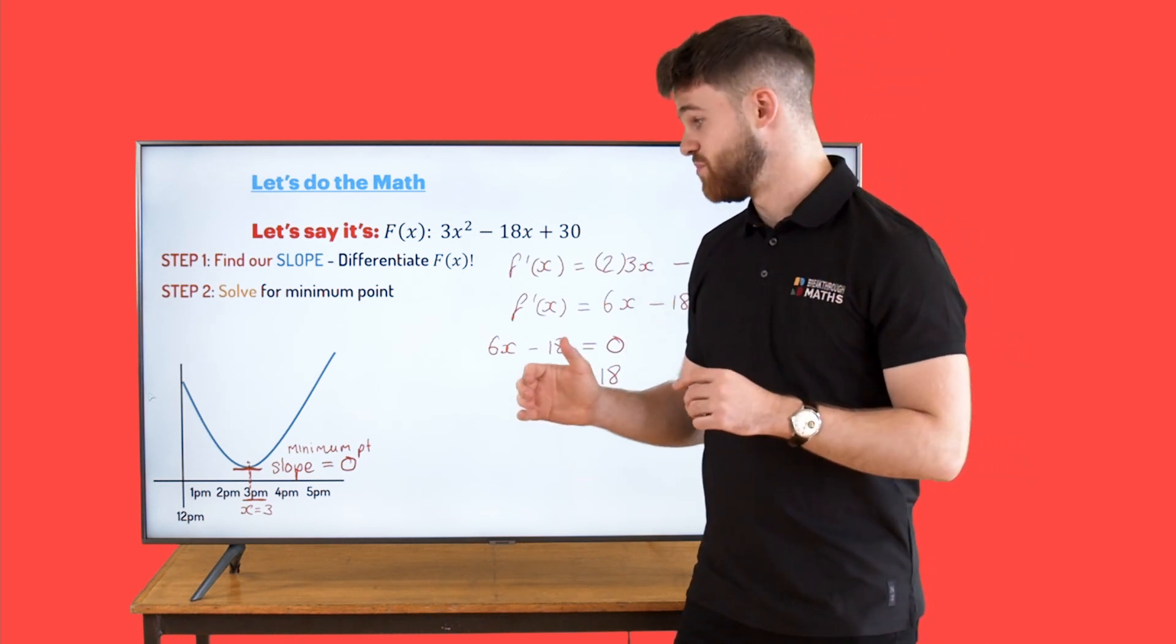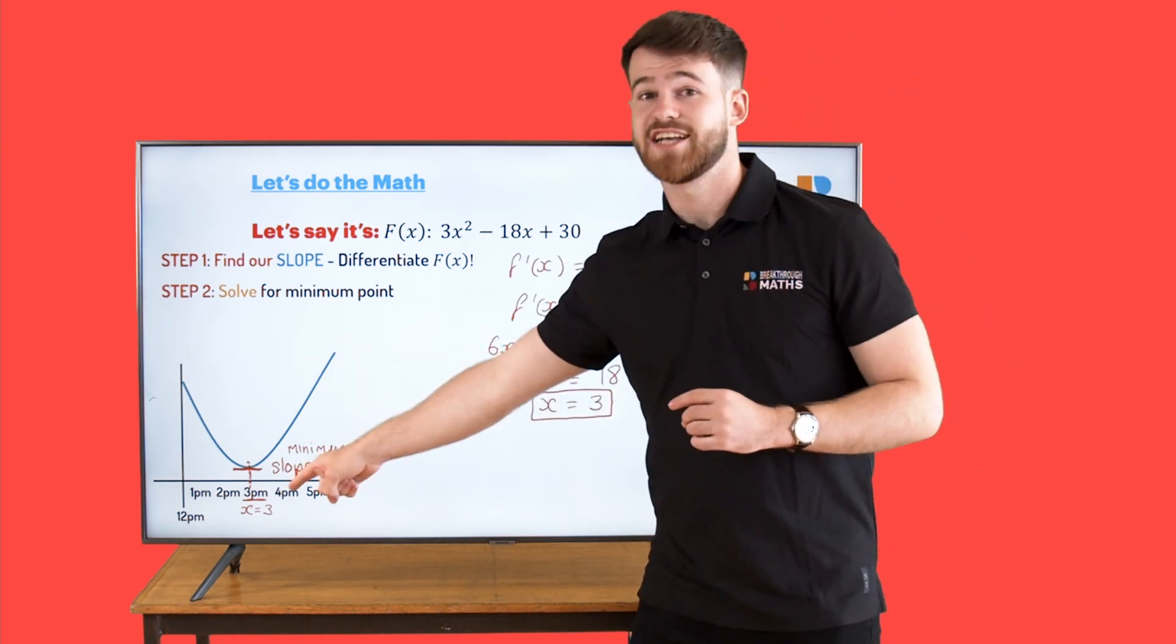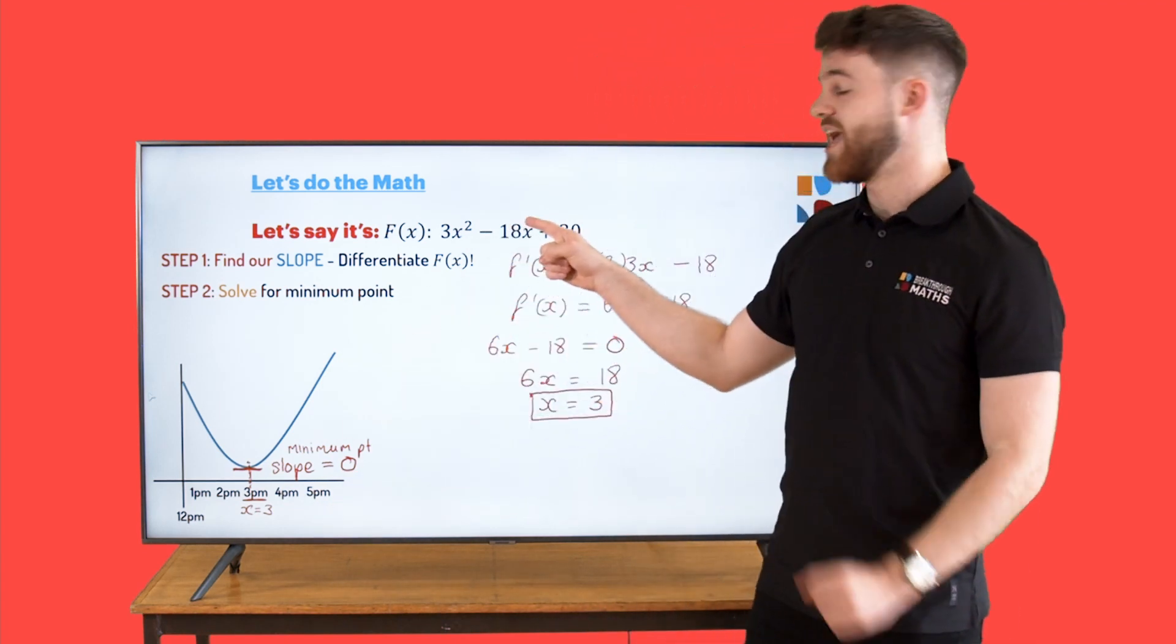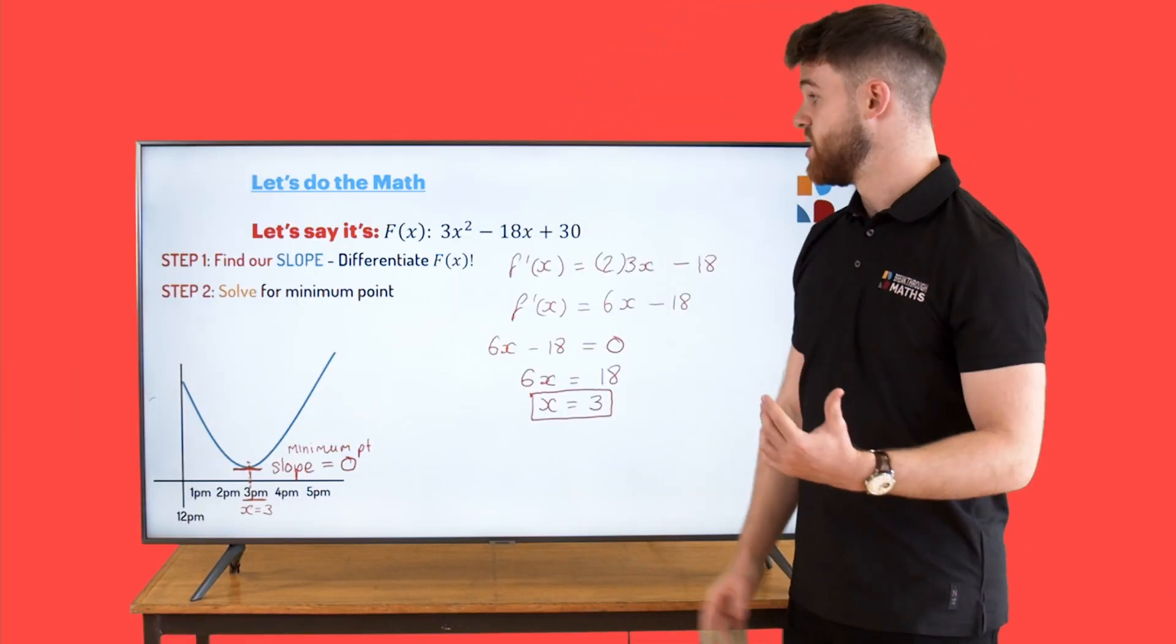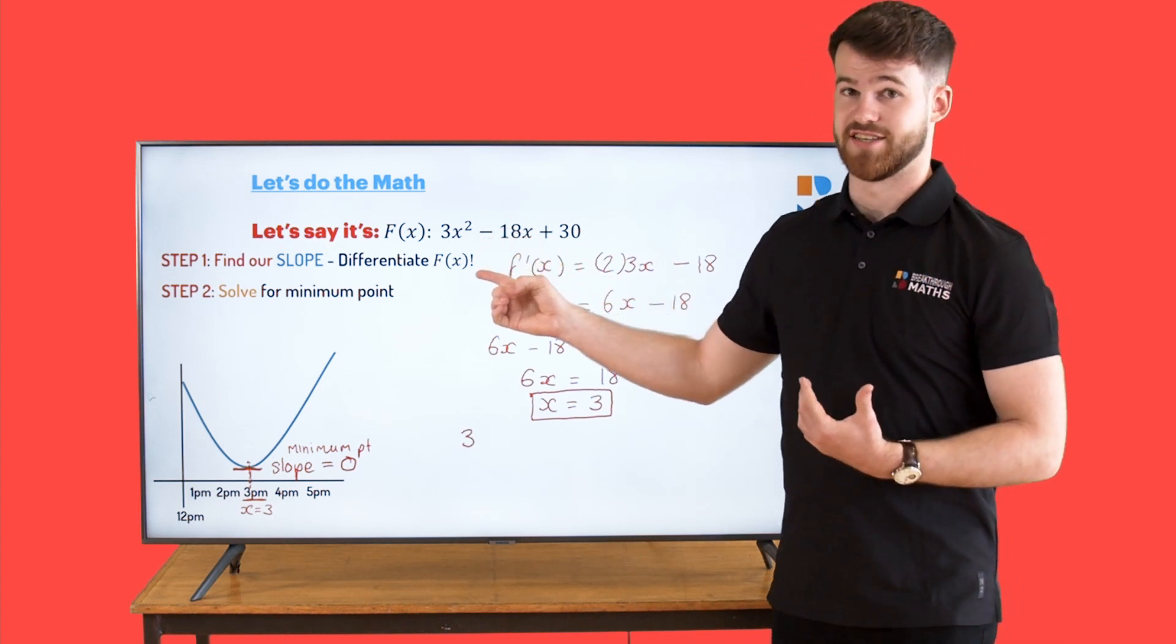And we can do that by subbing our x value of 3 into GameStop's function. Don't sub it into the slope equation. That's important. We want to know the price at 3pm. So sub in 3 instead of x into its function.